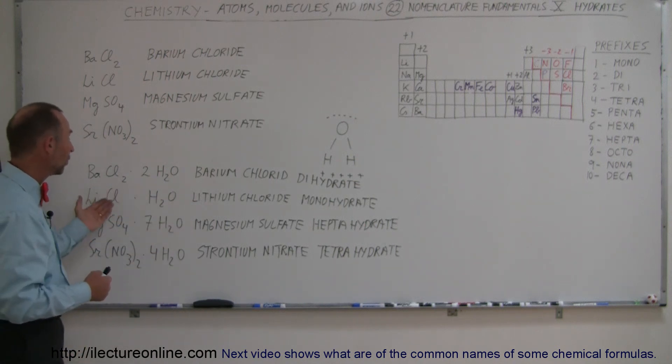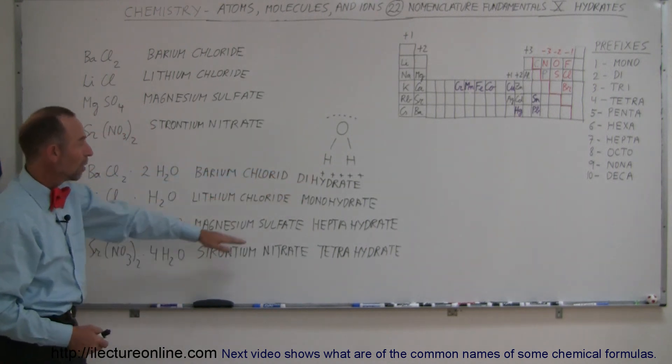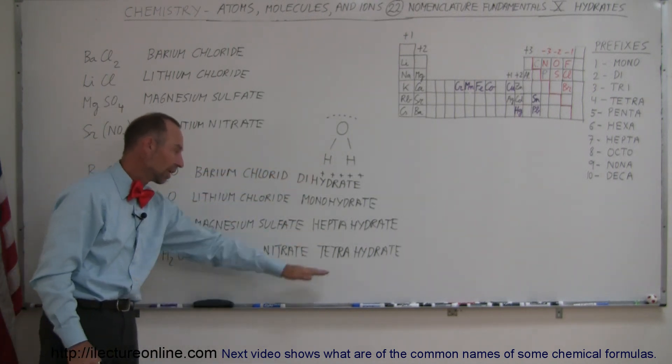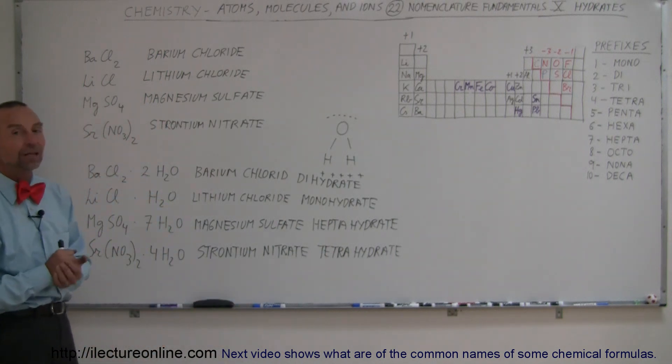And depending upon how many water molecules are joined, we call them with the proper prefix: di if there's two, mono if there's one, hepta if there's seven, tetra if there's four, and so forth. So those are the naming conventions we use for hydrates.